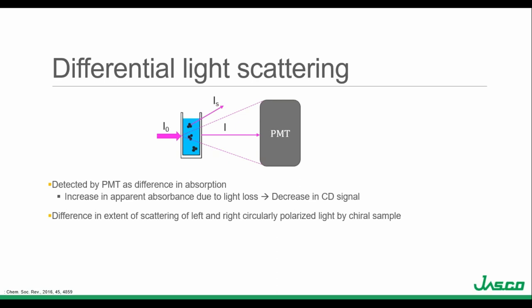Because chiral samples have different refractive indices for left and right-handed circularly polarized light, the amount of scattering for the left and right-handed components can differ, which changes the magnitude of the CD peaks and distorts the spectrum. The distortion depends on the size and shape of the particles and the refractive indices of the sample and solvent. To avoid differential light scatter, the particulate size should be less than one-tenth of the wavelength of the incident light. For hydrogel, solid, or high-salt biomolecule samples, this is why FTIR is sometimes used as a better secondary structure analysis technique, since FTIR uses significantly longer wavelengths.